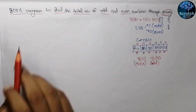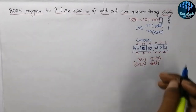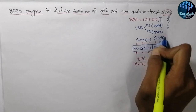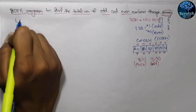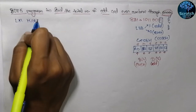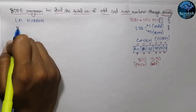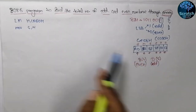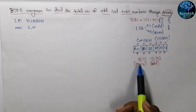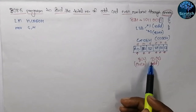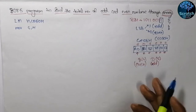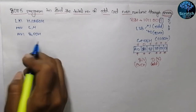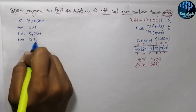Now let's write the assembly language program. I am starting the input from address C050 hex. First we input the total number of elements from C050 hex using LXI H, C050 hex, and move it into register C. Before inputting the elements, we initialize registers B and D with 00 hex using MVI B, 00 hex and MVI D, 00 hex, so they do not contain any garbage values.